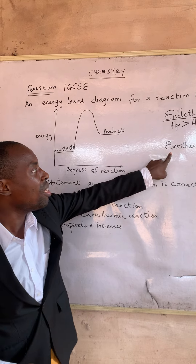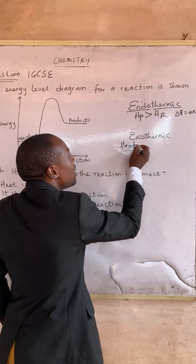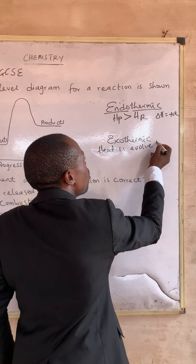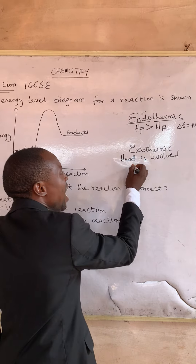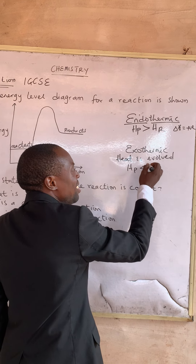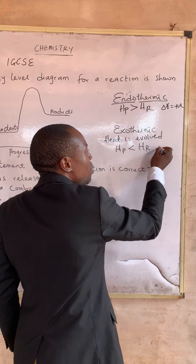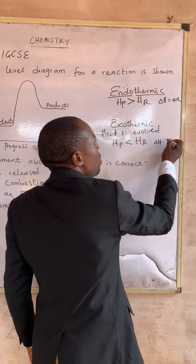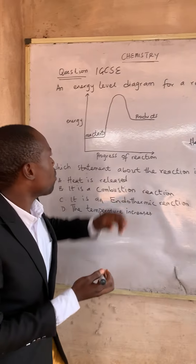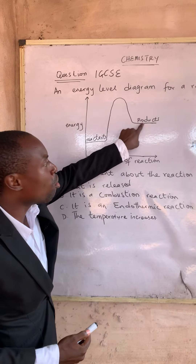The opposite of endothermic is exothermic, which simply means that heat is evolved to the surrounding. As such, the energy of the product is less than the energy of the reactant, and delta H is negative.